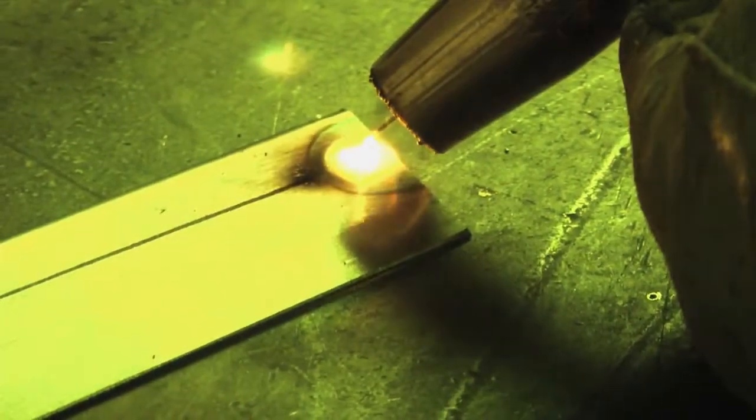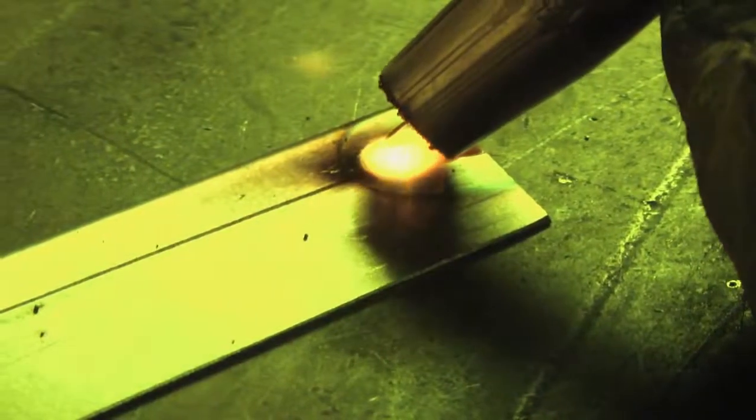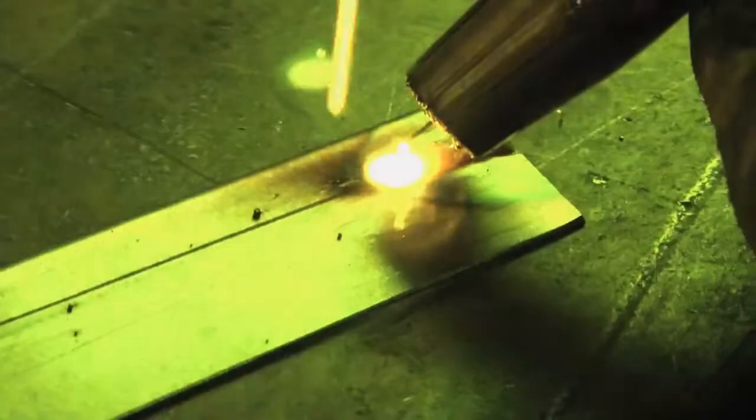Now we're going to come down to the butt weld. I've already tacked the ends together and the two plates are just touching each other. The difference here is I have the torch a little further away from the work, and I'm very lightly pushing that bead.